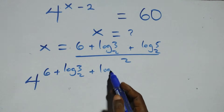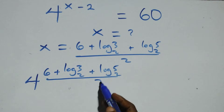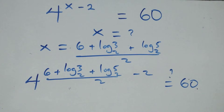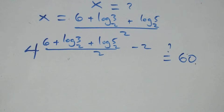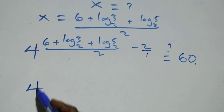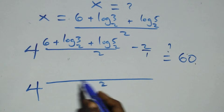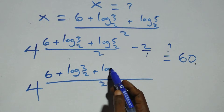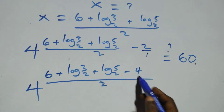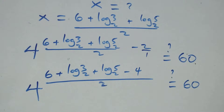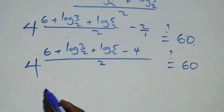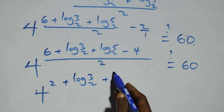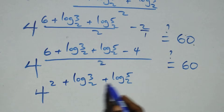Now we verify by substituting x equals 6 plus log 3 base 2 plus log 5 base 2 all over 2 back into the original equation. We have 4 raised to the power x minus 2 equals 60. Bringing the exponent together, we get 4 raised to the power of 6 plus log 3 base 2 plus log 5 base 2 over 2, then minus 2. That is 6 minus 4 equals 2 remaining, plus log 3 base 2 plus log 5 base 2 all over 2.